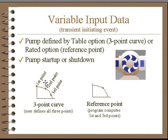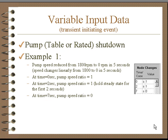For pumps defined by three-point curves or reference points, which are rated conditions which we also transform into a three-point curve, the data will be the speed and time. At this particular setup, at time zero, the speed is one, meaning it's running full speed. At time two, the speed is one, so it holds the steady state for two seconds. And at time seven, the speed is zero.